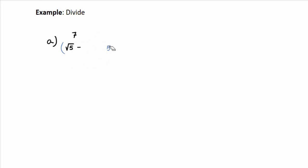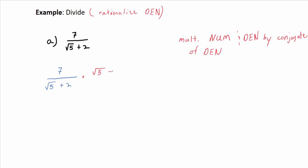When you have a quantity involving addition or subtraction in the denominator, if you want to get rid of the radical, then what you can do is multiply numerator and denominator by the conjugate of the denominator. So what's the conjugate of radical five plus two? Radical five minus two. So there's the original problem, and then I'm going to multiply numerator and denominator by the conjugate of radical five plus two, which is radical five minus two.